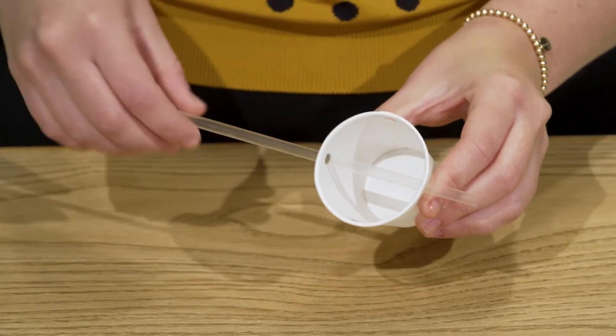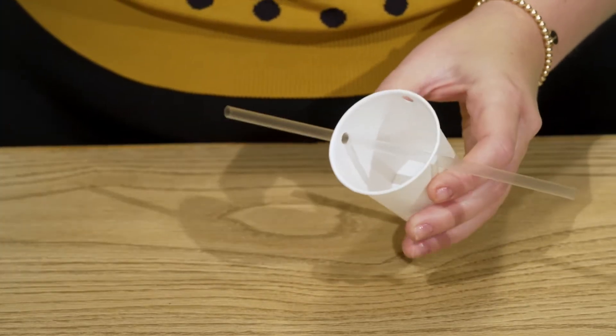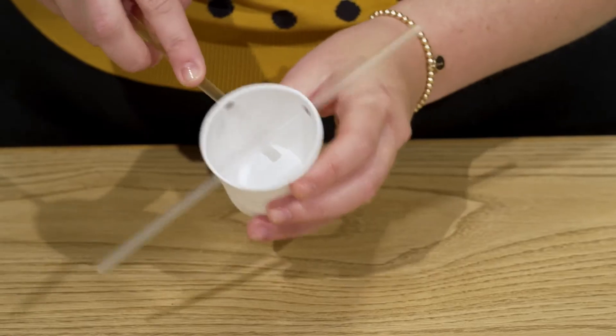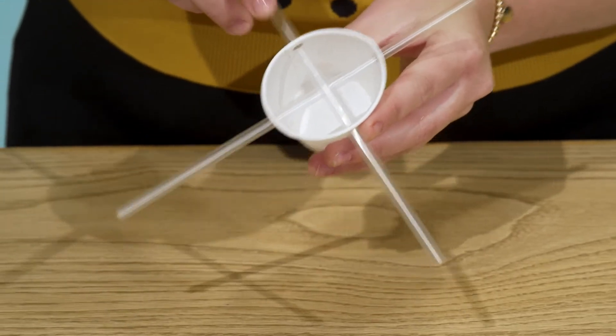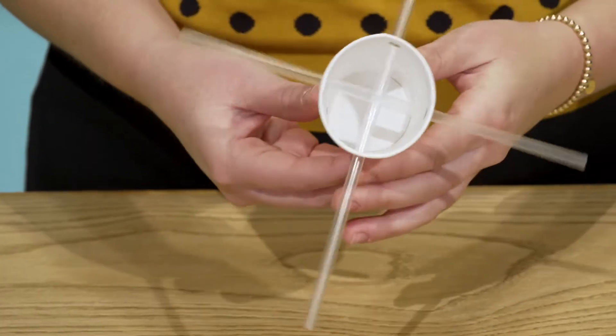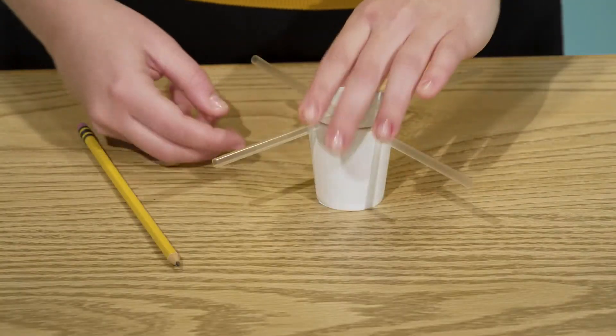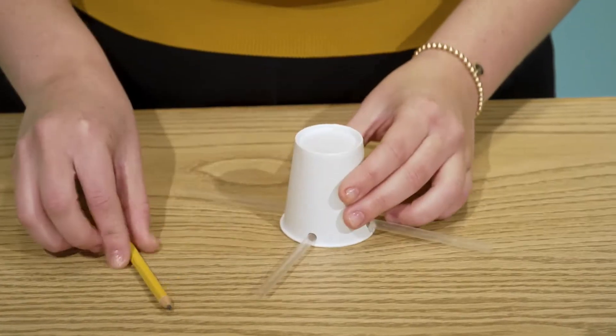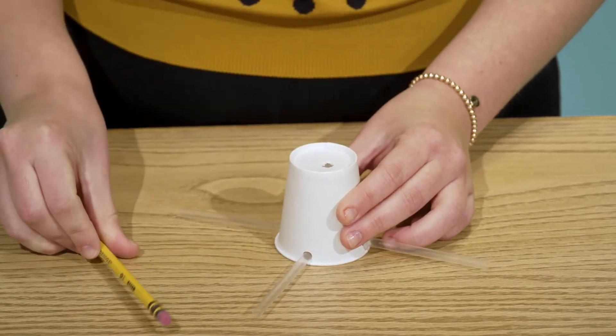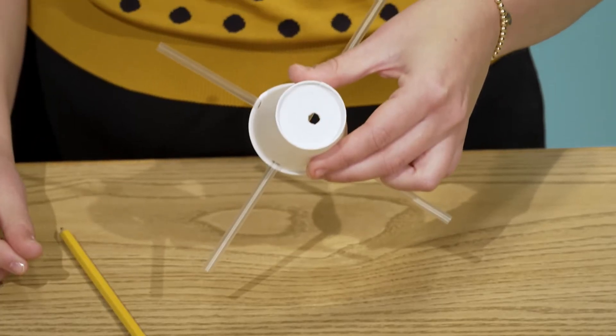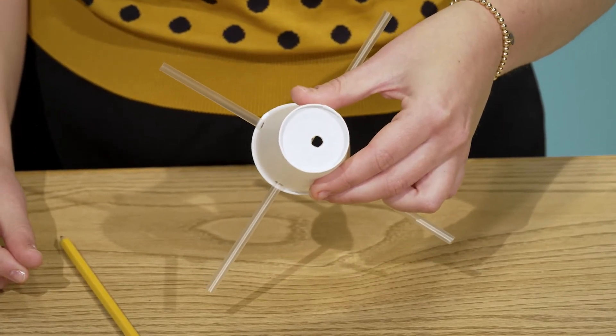Next, take your two straws and thread them through the holes in the cup so they crisscross, making a plus sign or an X. Flip that cup upside down on a table and poke a hole in the center of the bottom of the cup with your sharpened pencil. We'll set this cup aside for now and move on to the other four cups.